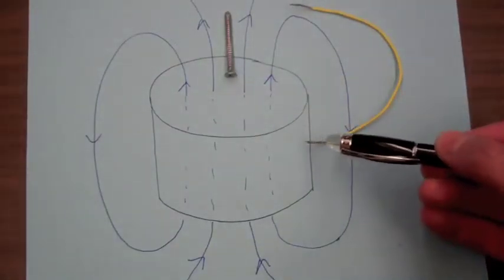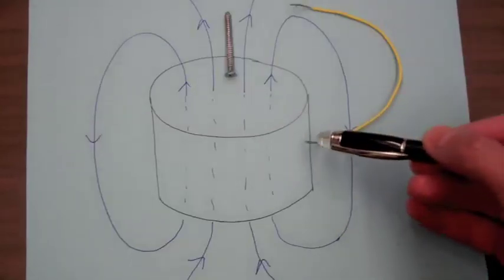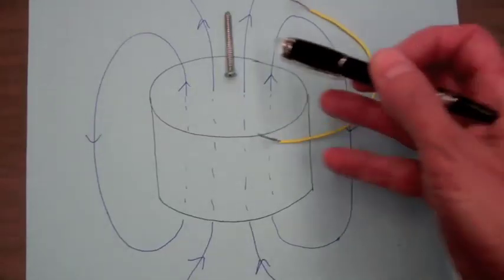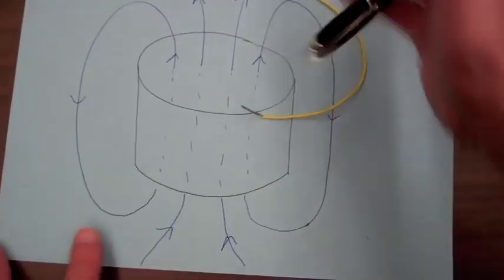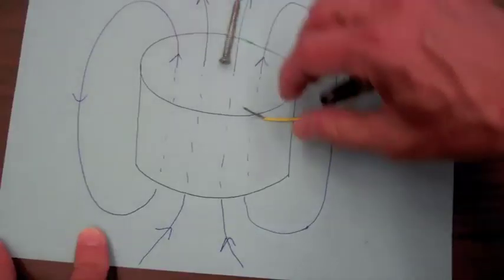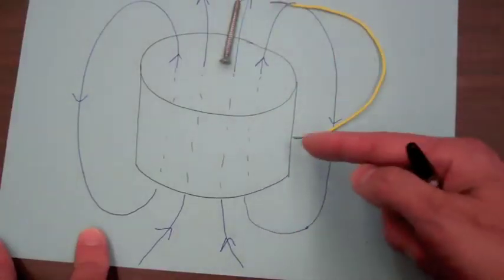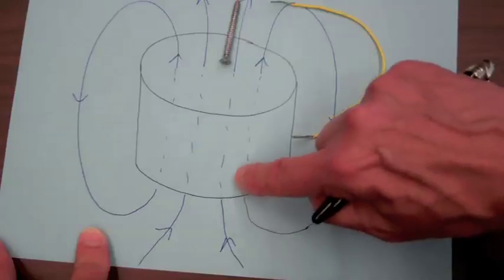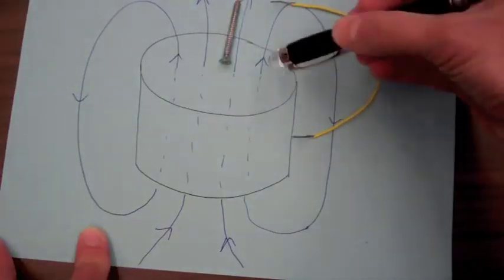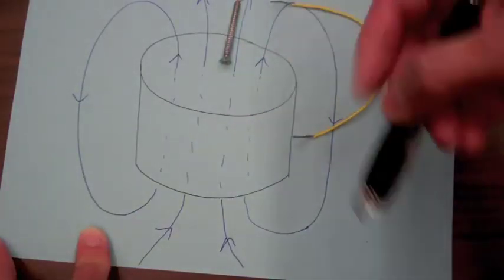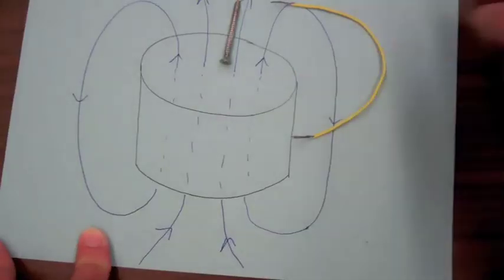So the force on that current flow, that current flow is just positive charge flowing from the edge of the magnet to the center. The force will be perpendicular to that direction and perpendicular to the direction of this magnetic field. So that will be a force that will act to rotate the magnet.